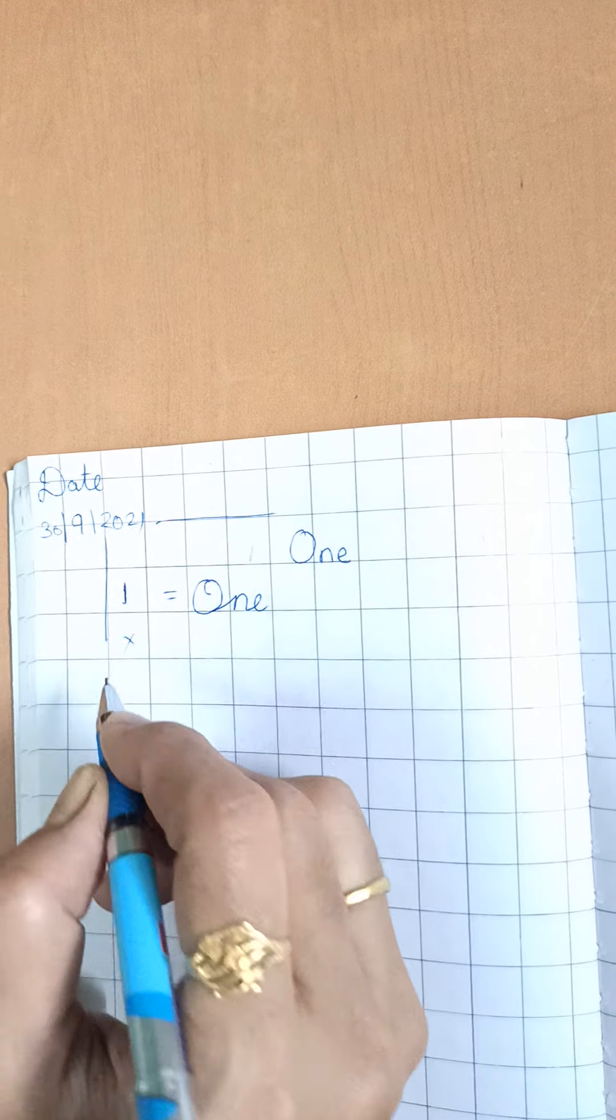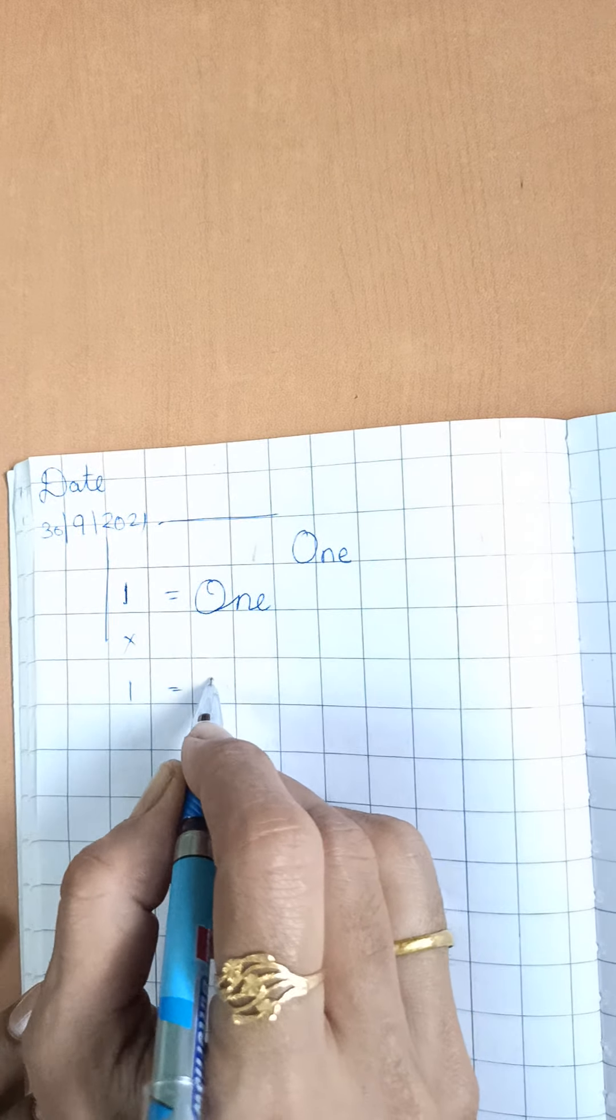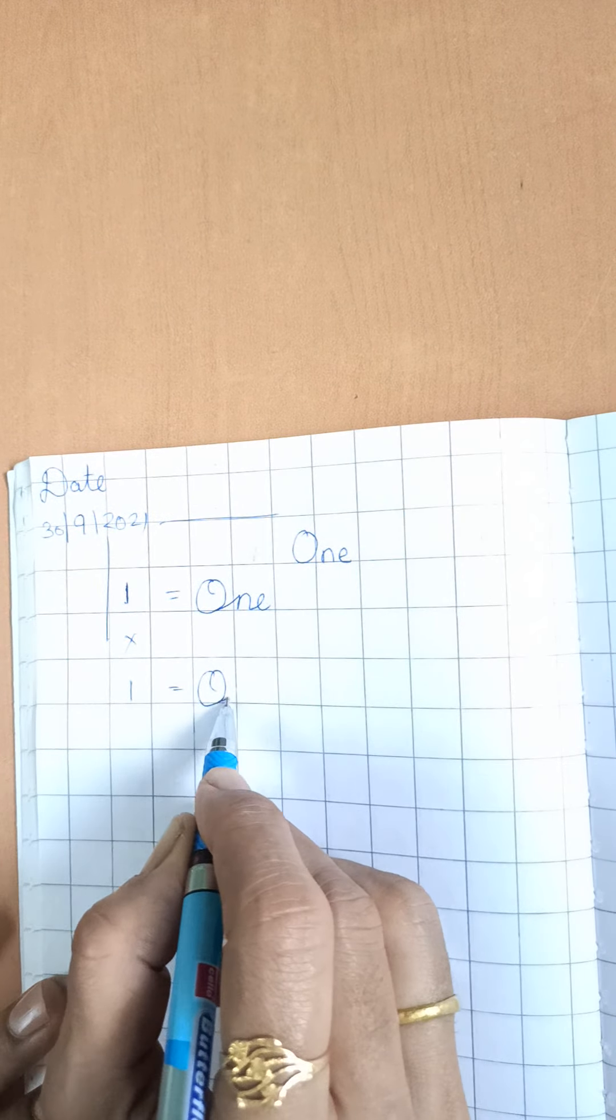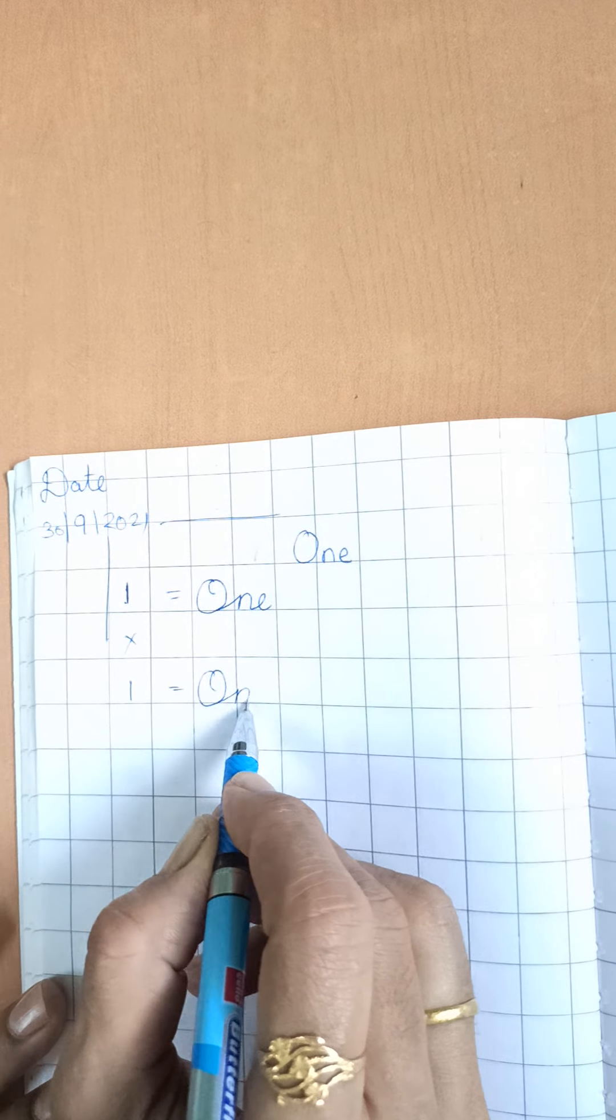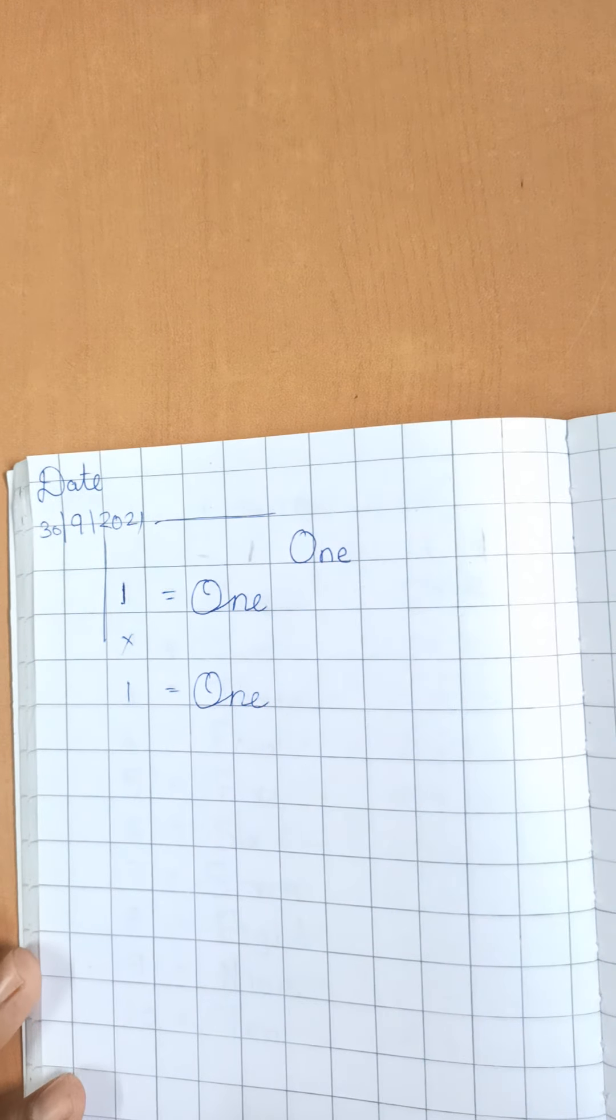See again. 1 is equal to O. Join here. Slanting line, standing line, N, E, 1.